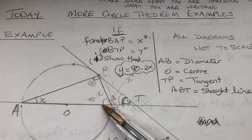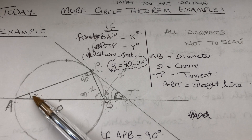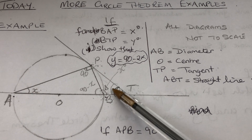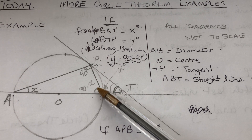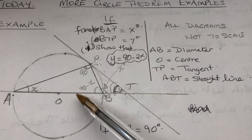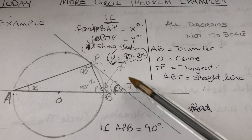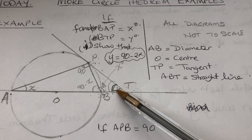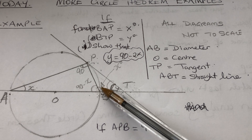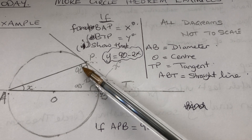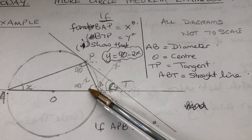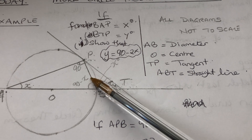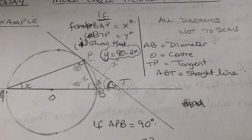If angle BAP is x, then by one of the theorems this corresponding angle is also x. And angle BTP is y. So we have this angle as x, that angle as y, and by theorem that angle is also x. Since this is a tangent, that angle will be 90, so this angle here will be 90 minus x for all three angles in the triangle to sum to 180.